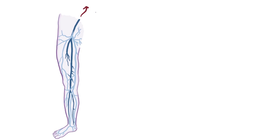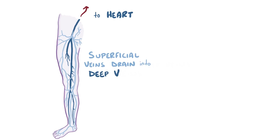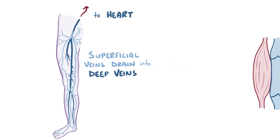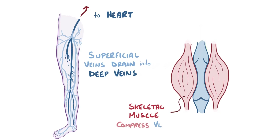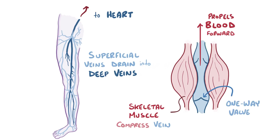Normally, blood makes it back to the heart from all the tissues and organs through a network of veins that merge over and over. Superficial veins drain blood into deep veins, which rely on the skeletal muscle pump to move blood forward. The surrounding skeletal muscles compress the vein and propel blood forward, and the veins prevent blood from moving backwards by using one-way valves.